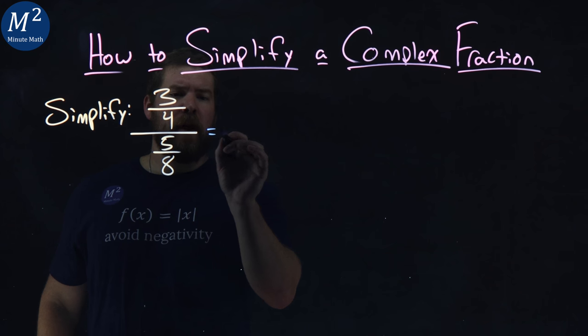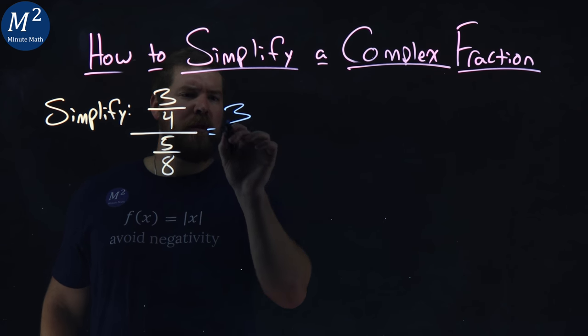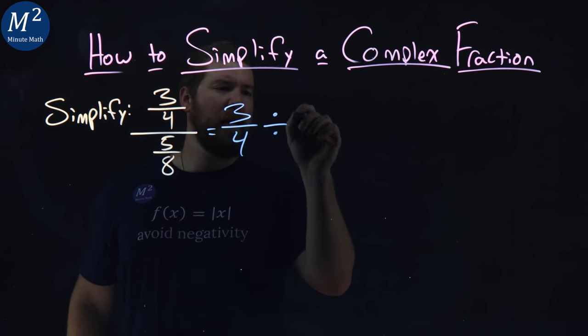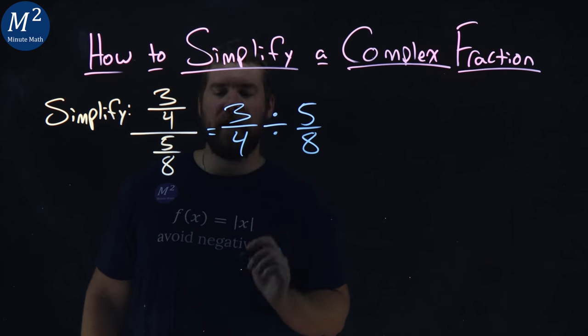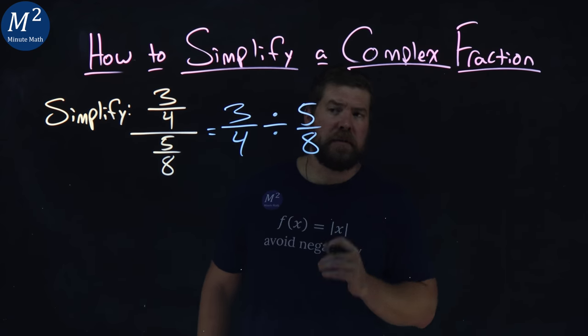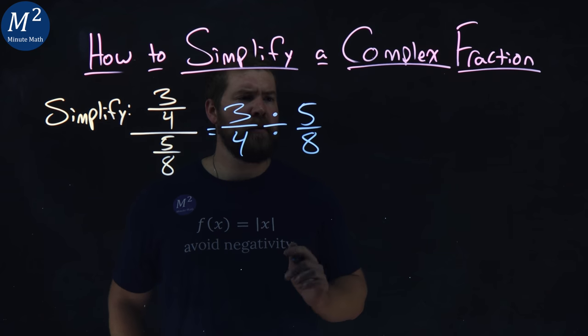Let's rewrite this problem. As we said, three-fourths divided by five-eighths. Now that looks a lot easier to solve, makes it more clear what we're doing.